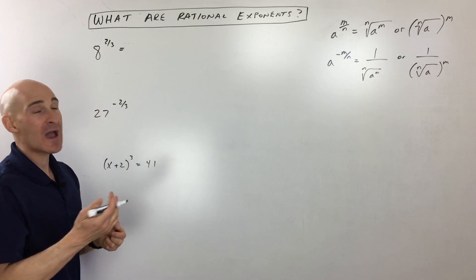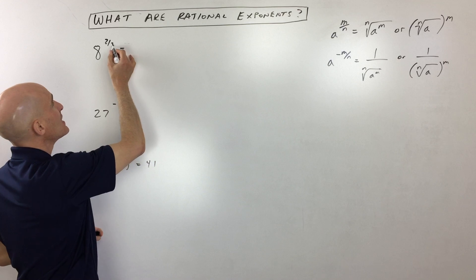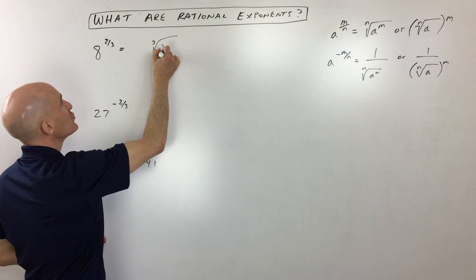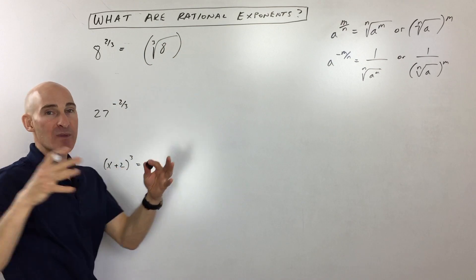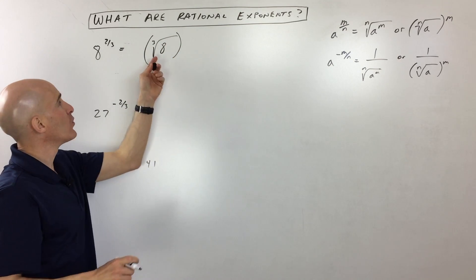So 8 to the 2/3. The way I like to do this, to make it simple, is do the root part first. So this means the cube root of 8. Now, the reason I'm doing that is because it makes the number smaller. So what is the cube root of 8?